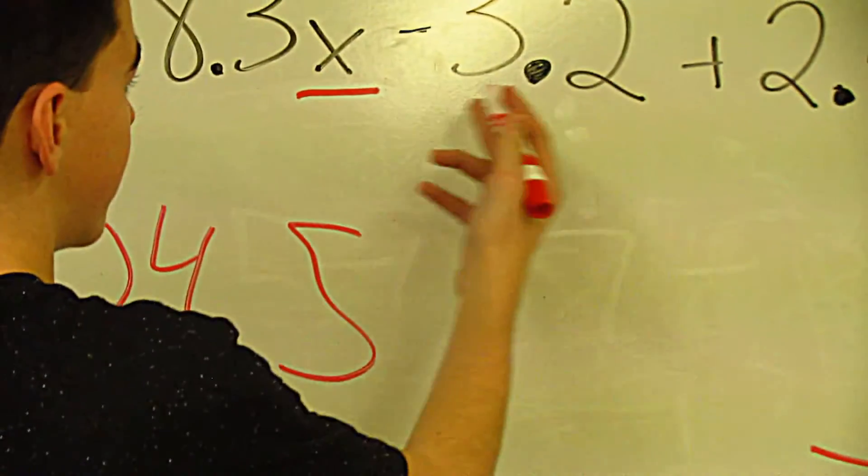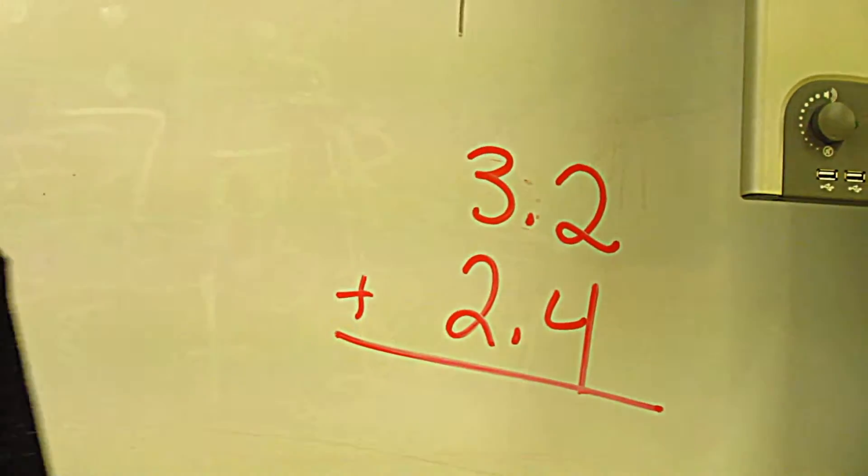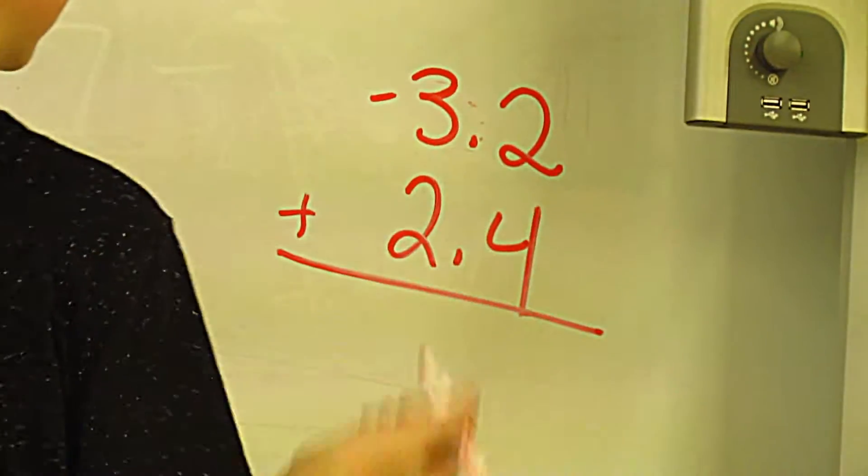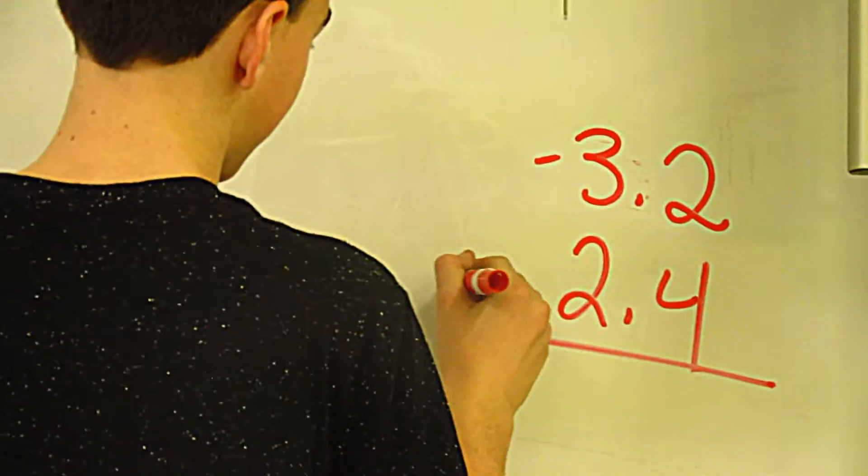And here is 3.2 plus 6.4. You can't do that because they're different signs, because 3.2 is negative, so it turns into a subtraction problem.